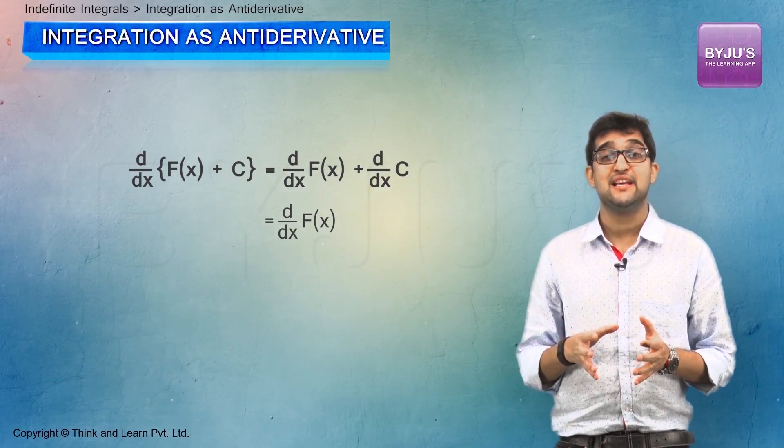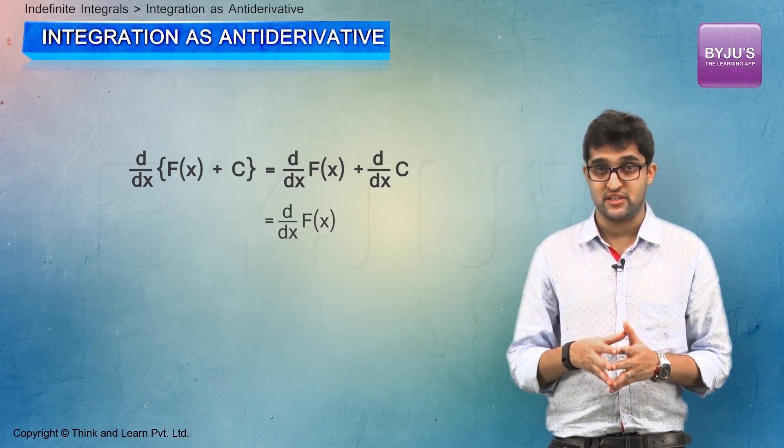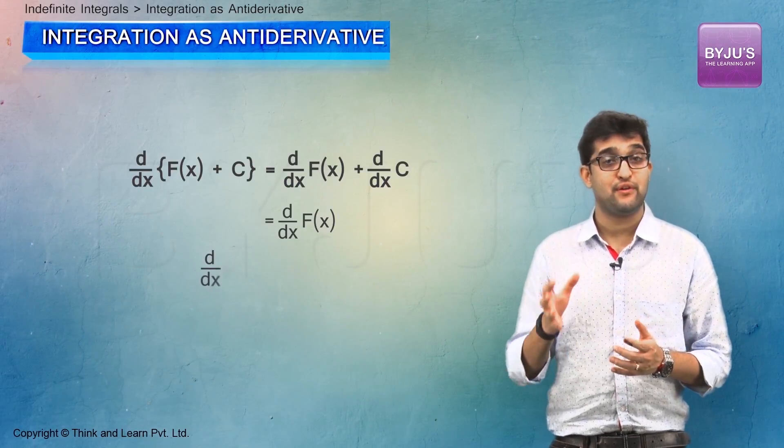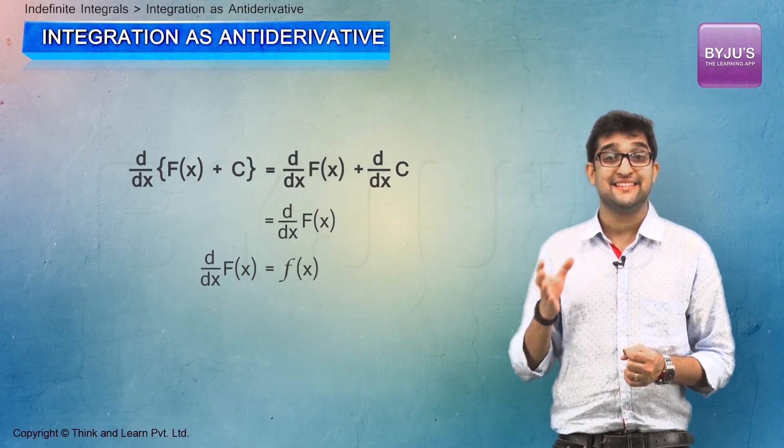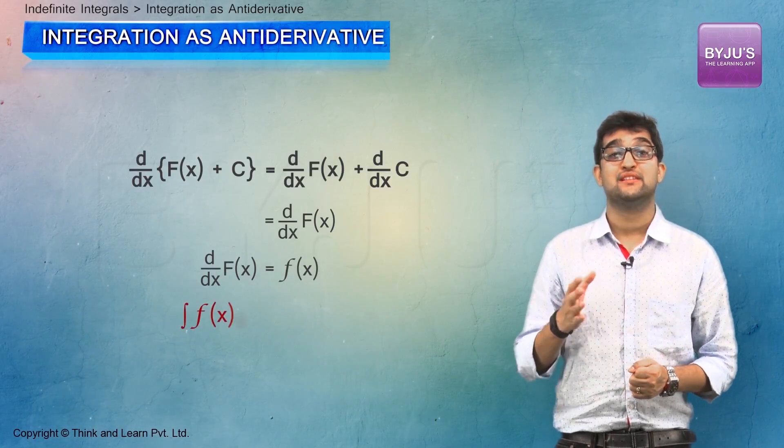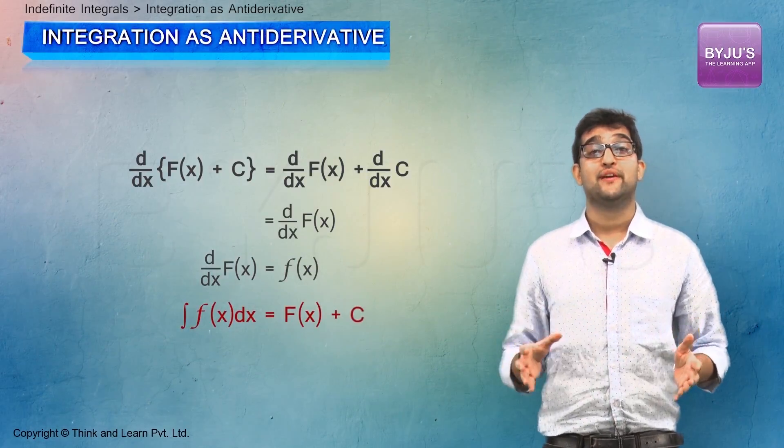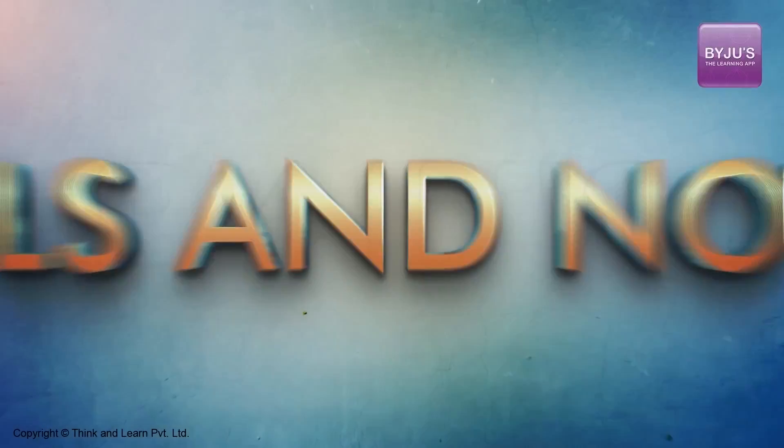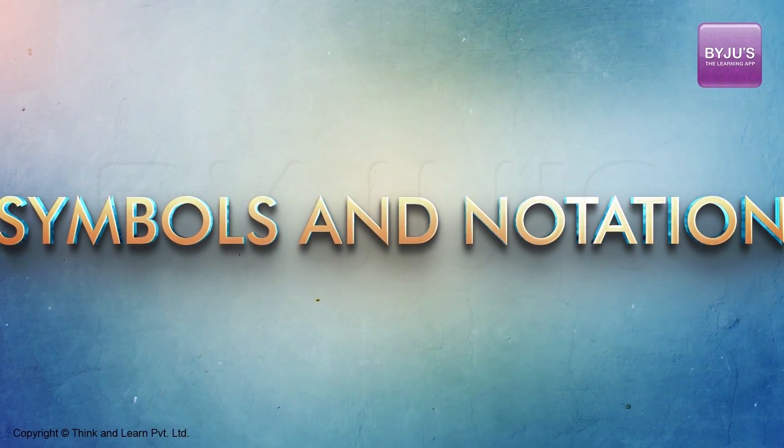So d by dx of F of x is f of x, then integral f of x dx will be F of x plus C. Let's now try to understand what the symbols and terms are called in the expression in front of you.